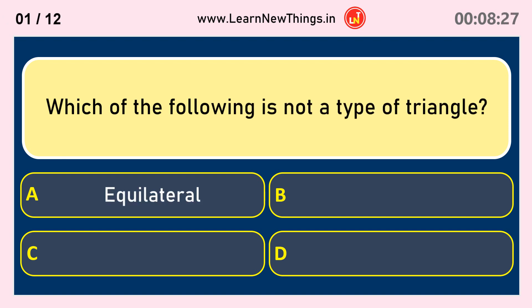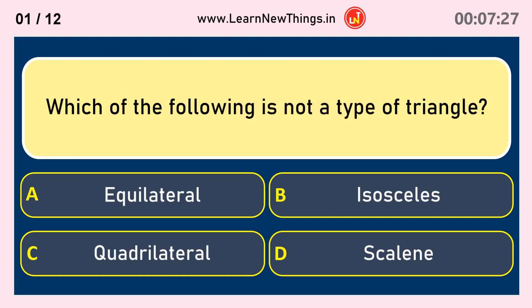Which of the following is not a type of triangle? Quadrilateral.